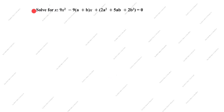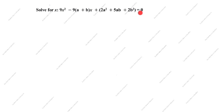Hi friends, welcome to my channel Excellent Ideas in Education. Today we are going to solve this quadratic equation problem. This is a board exam problem. Solve for x: 9x² minus 9(a+b)x plus (2a²+5ab+2b²) equals 0. Now we will see how to solve this problem.